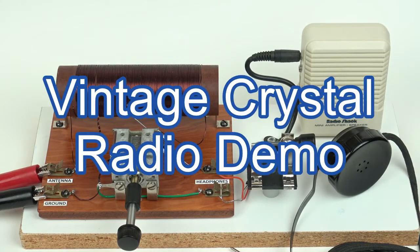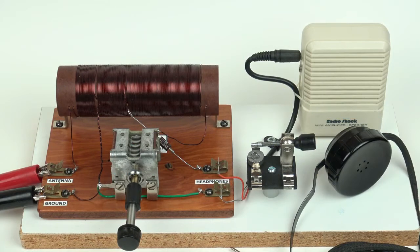This video is the demonstration of a 1950s crystal set sold by Allied Radio of Chicago for $2.50. It tunes the AM radio band.